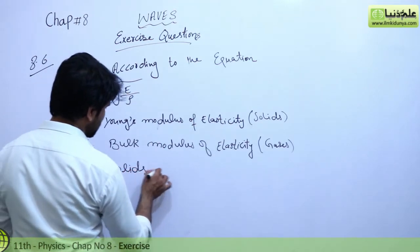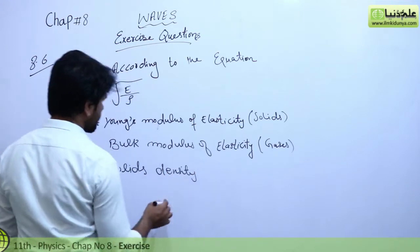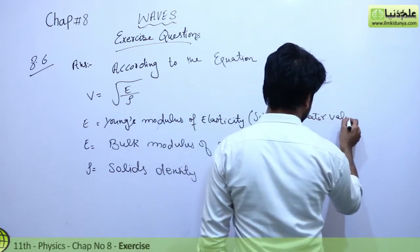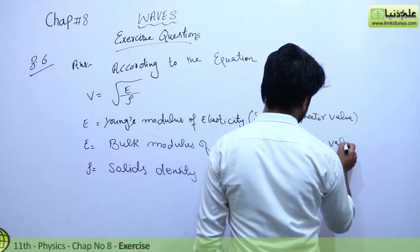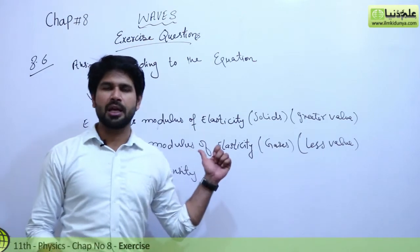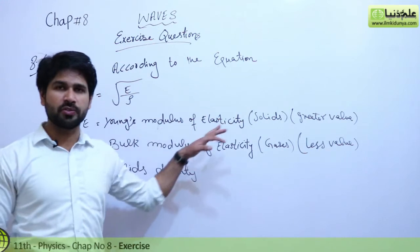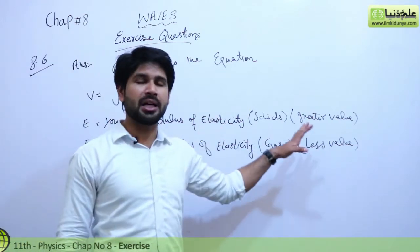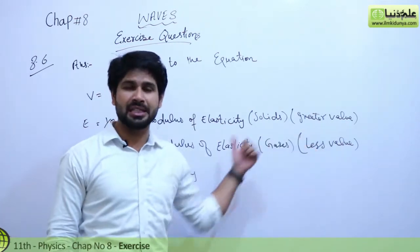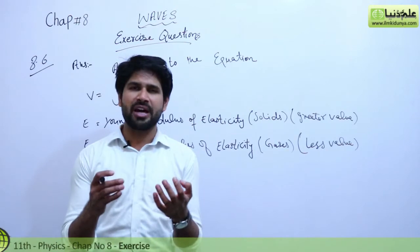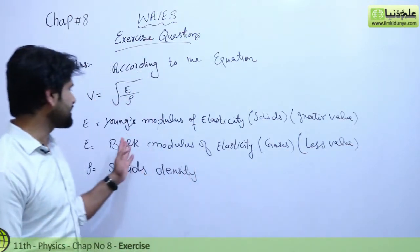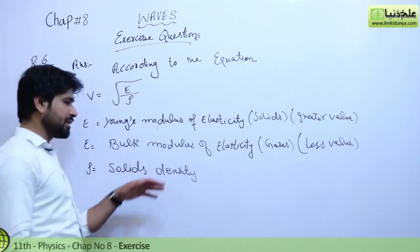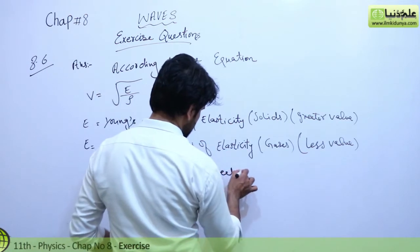Now we discuss density. The density of solids has a greater, higher value, while gases have a lesser value. The value of E for solids is greater because in solids particles are very closely packed together. In gases, we use the bulk modulus of elasticity, which has a lesser value. The density of solids is also greater than gases.